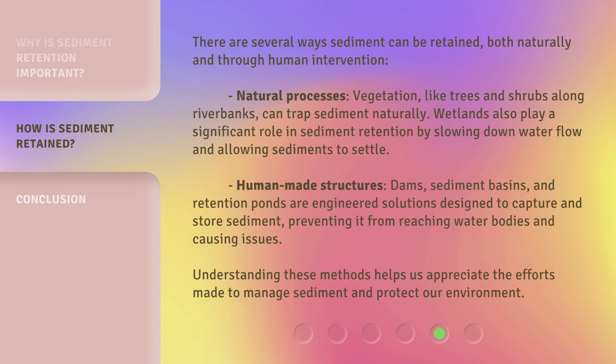There are several ways sediment can be retained, both naturally and through human intervention. Natural processes: vegetation, like trees and shrubs along riverbanks, can trap sediment naturally. Wetlands also play a significant role in sediment retention by slowing down water flow and allowing sediments to settle.